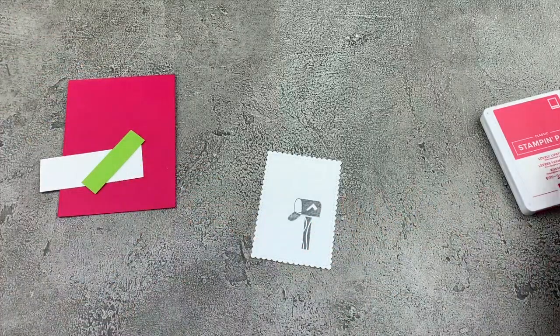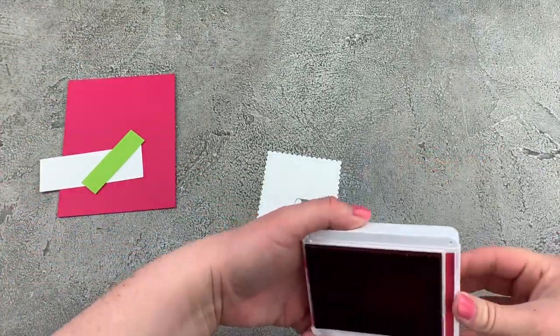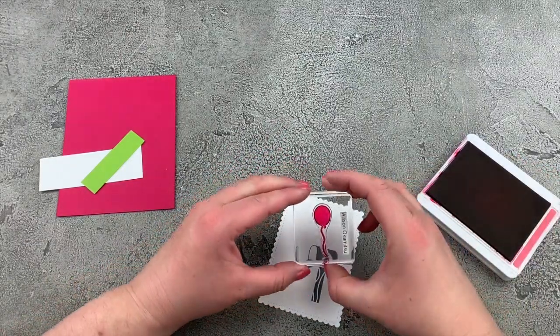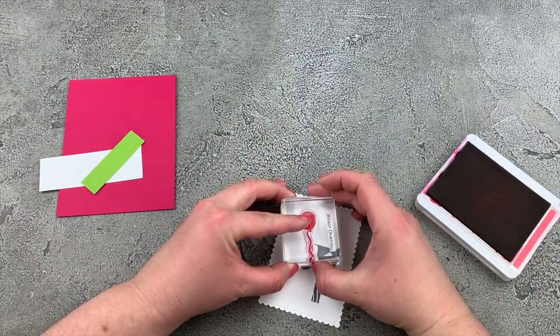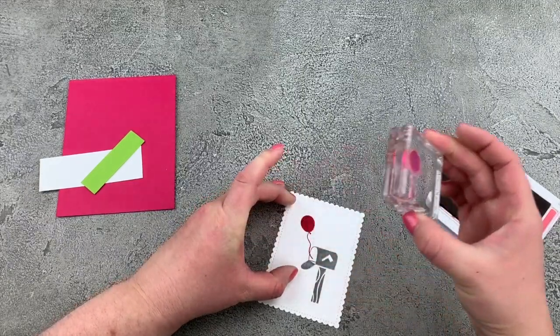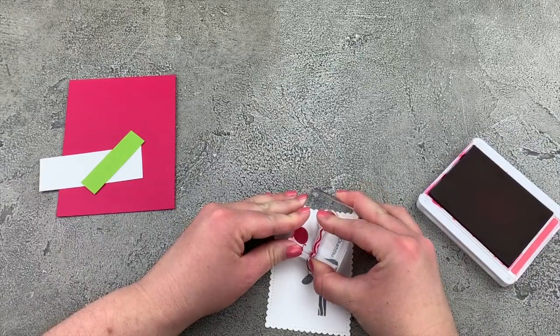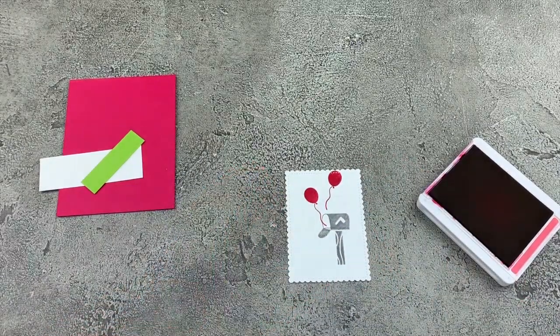And then I'll take my Lovely Lipstick and I've got my balloon stamp. And we are going to have some balloons coming right out of the mailbox. So there's one. And then this one is escaped and is flying away also. Isn't that so cute?